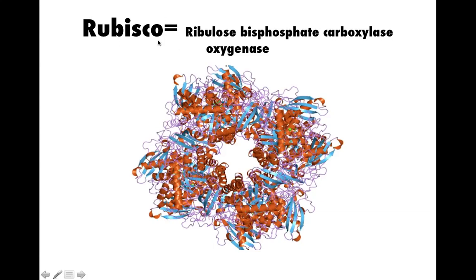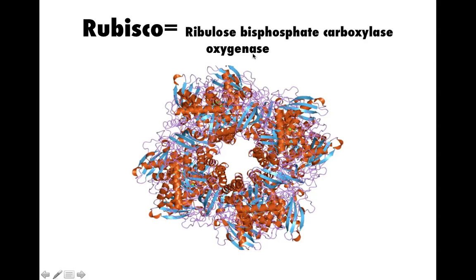RUBISCO makes me think of NUBISCO — a company that makes cookies and crackers. RUBISCO is an enzyme that adds carbon dioxide to organic molecules. The '-ase' ending suggests it works on carboxyl substrates — carboxylase — but it can also work on oxygen — oxygenase. So it actually has two functions: a good function and a not-so-good function, which we'll discuss.